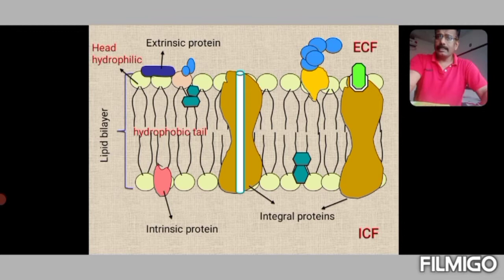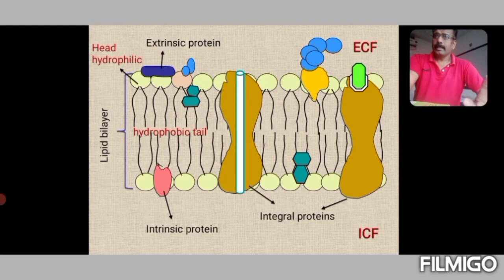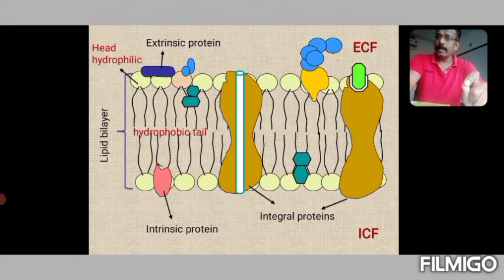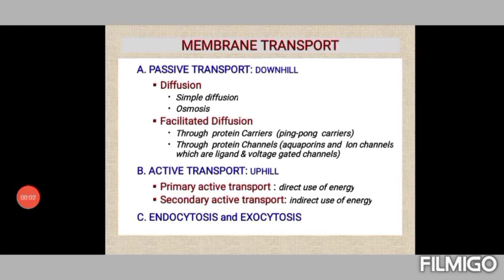An important function of the membrane is to prevent unwanted molecules from passing through it. There are peripheral proteins (extrinsic proteins) and intrinsic proteins, as well as integral proteins that lie along the length of the membrane — also called transmembrane proteins. These integral membrane proteins can act as receptors, ion channels, and carriers, which are important molecules in the transport of materials across the plasma membrane.